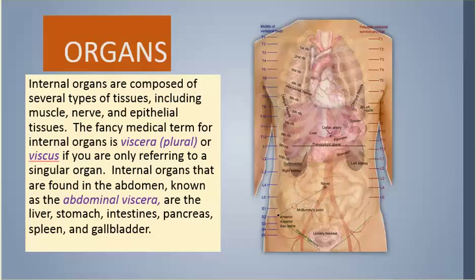Internal organs are composed of several types of tissues, including muscle, nerve, and epithelial tissues. The medical term for internal organs is viscera (plural), or viscus if referring to a singular organ. Internal organs found in the abdomen, known as the abdominal viscera, are the liver, stomach, intestines, pancreas, spleen, and gallbladder.